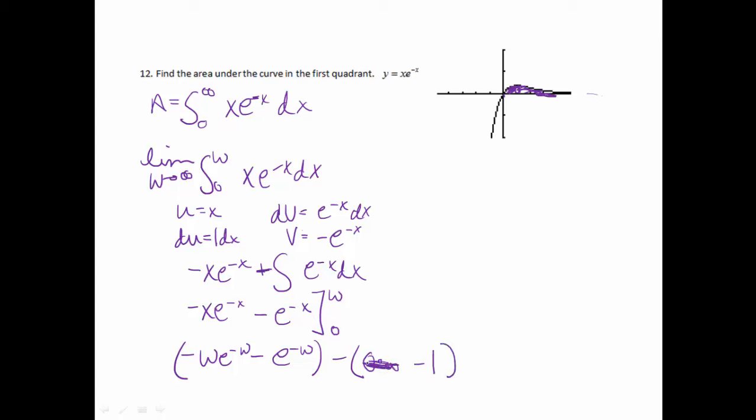My problem is right here, because 0 times infinity is an indeterminate form, so we are not allowed to do that. So what I am going to try to do on this one is change it so that I can use L'Hôpital's rule on it. Wait, just a second, I don't have to do that right now, because I was just plugging in 0. So if I plugged in 0, I'd get 0 times 1, which is 0, so ignore that comment. So I'm going to end up having negative w, e to the negative w, minus e to the negative w, and then this will end up being plus 1.